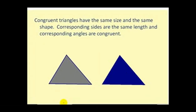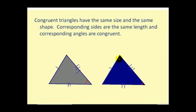Congruent triangles have the same size and the same shape. Therefore the corresponding sides have the same length and the corresponding angles are congruent. So each pair of corresponding sides is the same length, and each pair of corresponding angles is equal in measure.